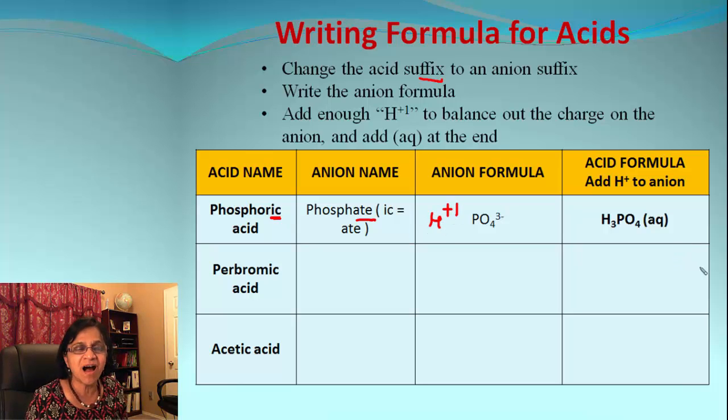Let's take the second example: per-bromic acid, ending with -ic again. So it must be I ate something icky, so the parent ion is per-bromate. What is the formula for per-bromate? It is BrO4 -1.